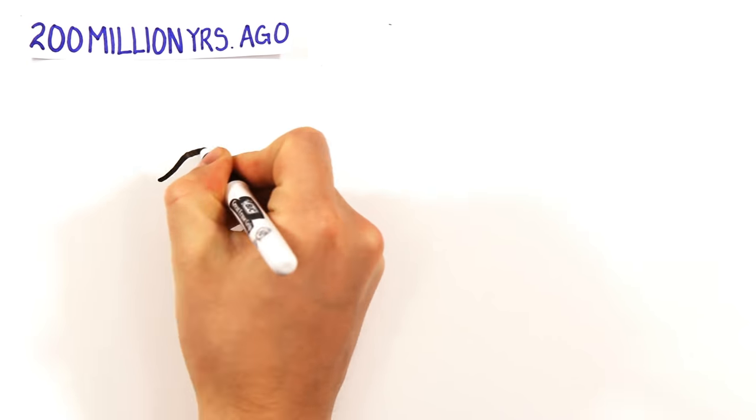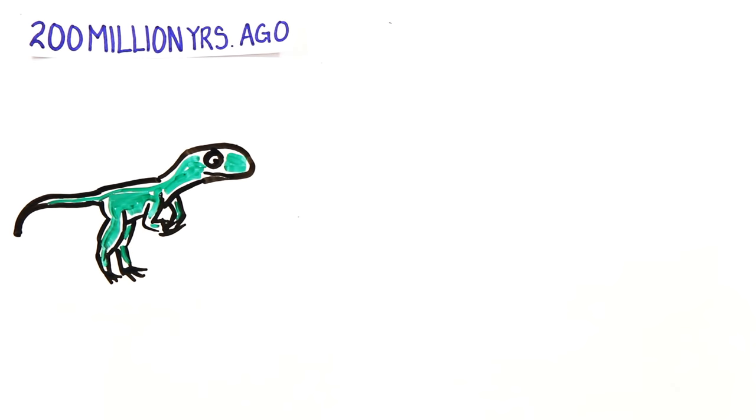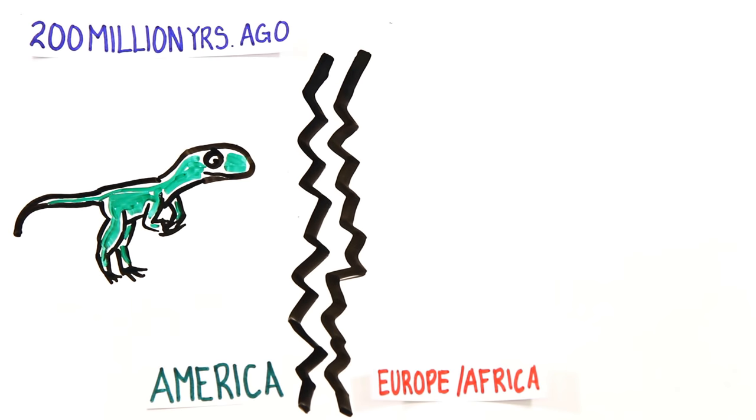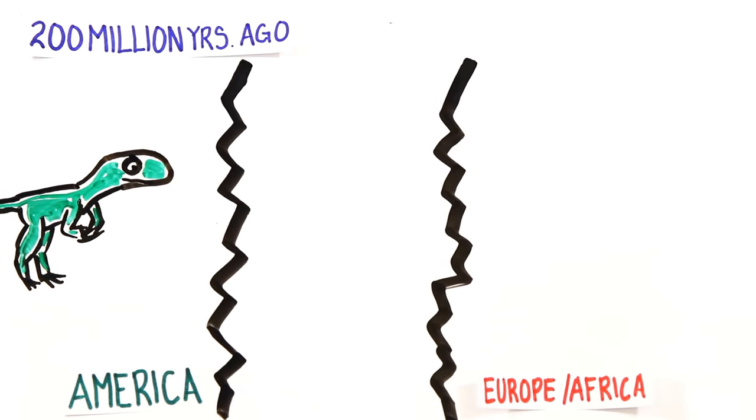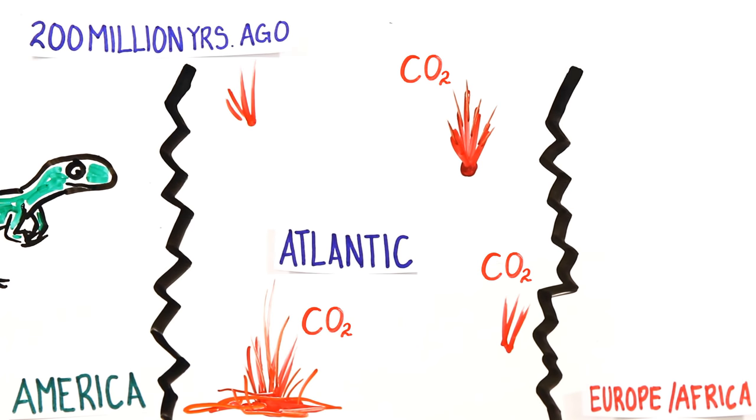Life had only 50 million years to recover until the fourth mass extinction came. At this time, early small dinosaurs roamed the land. A huge volcanic rift opened in the middle of the planet, eventually splitting the Americas from Europe and Africa, and forming the Atlantic Ocean. The volcanoes spewed out carbon dioxide, increasing temperatures, and killing about 80% of the species around at that time.